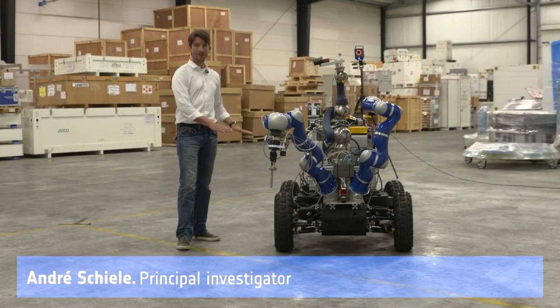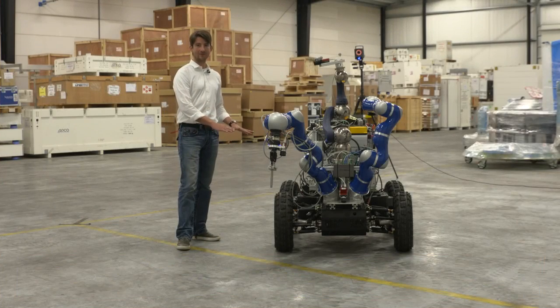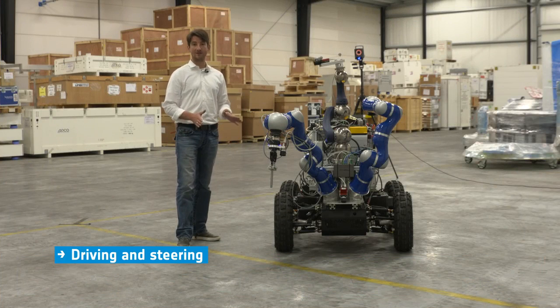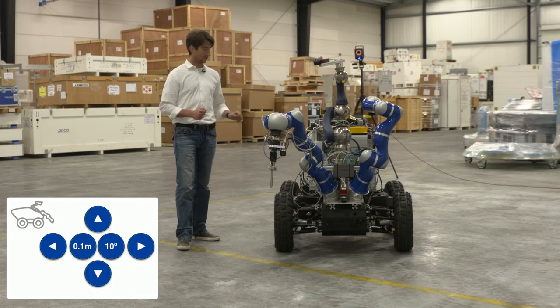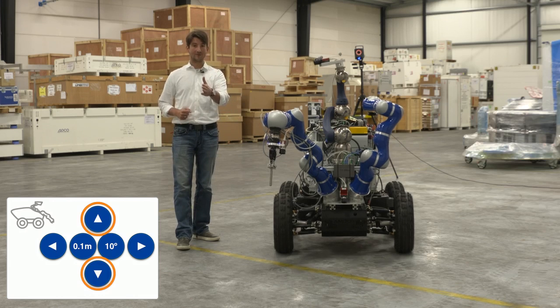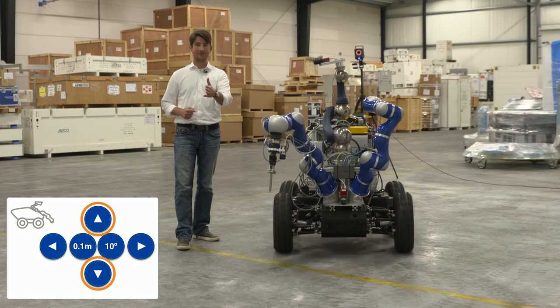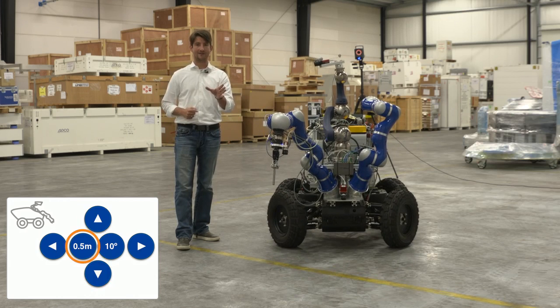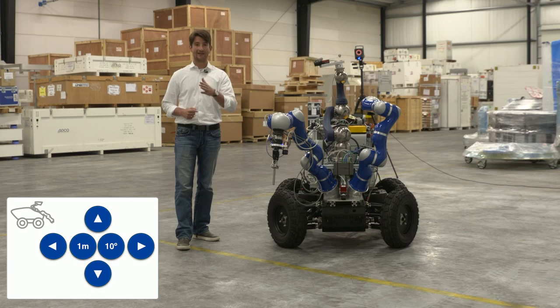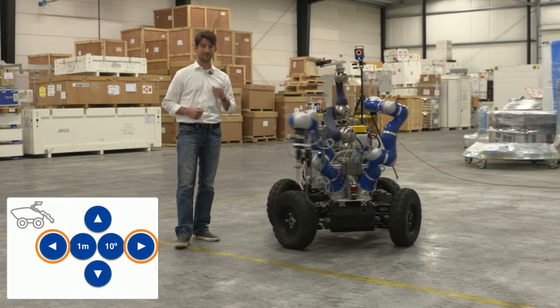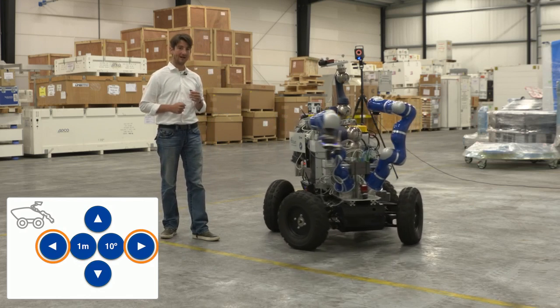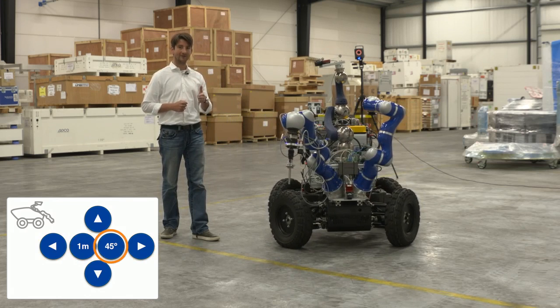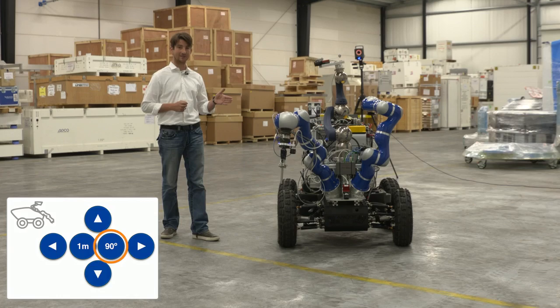Interact Centaur has a mobile platform that is rough terrain compatible. It has four wheels and four wheel steering. Interact can go forward, backward and you will be able to command it in increments of 10 centimeters, 50 centimeters and one meter. It can do spot turns and you will be able to command increments of 10 degrees, 45 degrees and 90 degree segments.